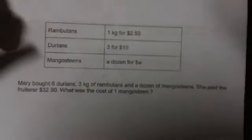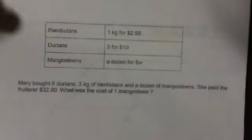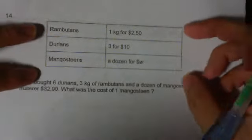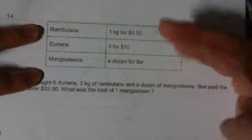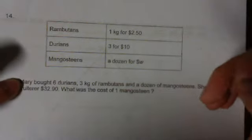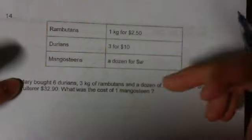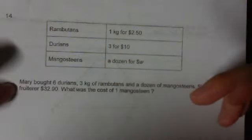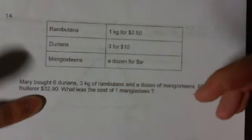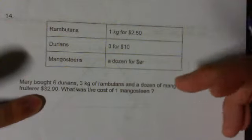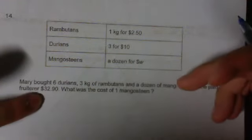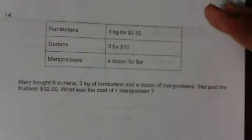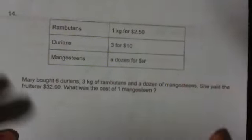Kuo Chuan paper 2 question 14. This is the graph for the fruits and their cost. Mary bought six durians, 3 kg of rambutans and a dozen mangosteen. She paid the fruit seller $32.90. What was the cost of one mangosteen? This can be quite easy if you do it logically, step by step.